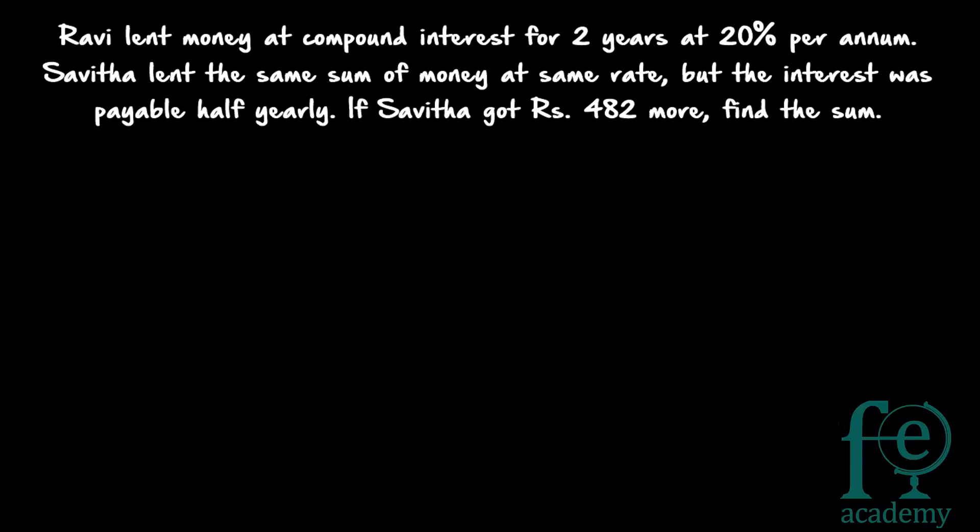Hi friends, welcome to today's class. Today's question is: Devi lent money at compound interest for 2 years at 20% per annum. Savitha lent the same sum of money at the same rate, but the interest was payable half yearly. If Savitha got Rs.482 more, find the sum. A particular sum is lent by both Devi and Savitha at compound interest. The time period is also the same — 2 years — and the interest is also the same — 20% per annum.